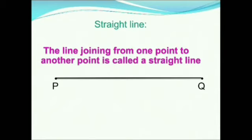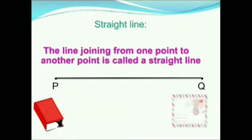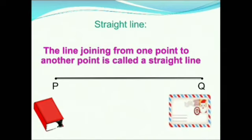Straight line can be drawn using a straight edge. Straight edge means an object or thing which has a plain surface. Now you say, where do we find straight edges? For example, the edge of a book, the side of a postcard. See in your house which objects have straight edges, and try to draw a straight line using those objects.